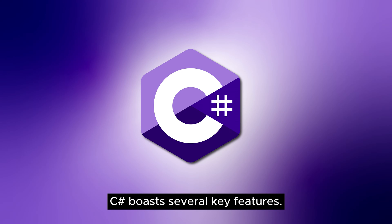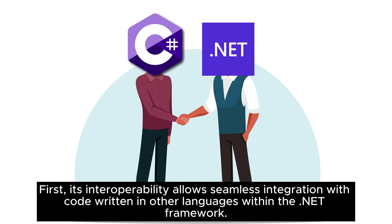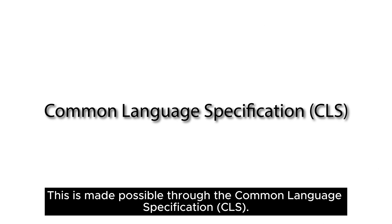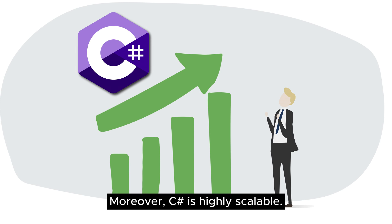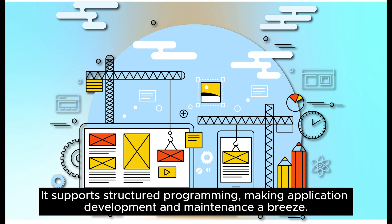C-sharp boasts several key features. First, its interoperability allows seamless integration with code written in other languages within the .NET framework. This is made possible through the Common Language Specification, CLS. Moreover, C-sharp is highly scalable. It supports structured programming, making application development and maintenance a breeze.